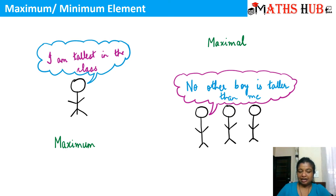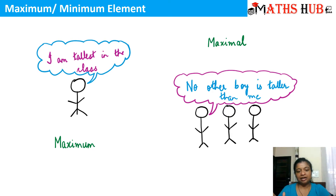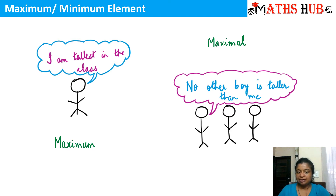So it is quite clear that when you can pick only one element — if you relate this with a poset — if you can pick up one element in the poset which is the greatest among all, it will be declared as the maximum element. And if there are more than one elements which are greater, they cannot be called maximum but they are called the maximal elements. It can happen that the maximal and the maximum elements are the same element.